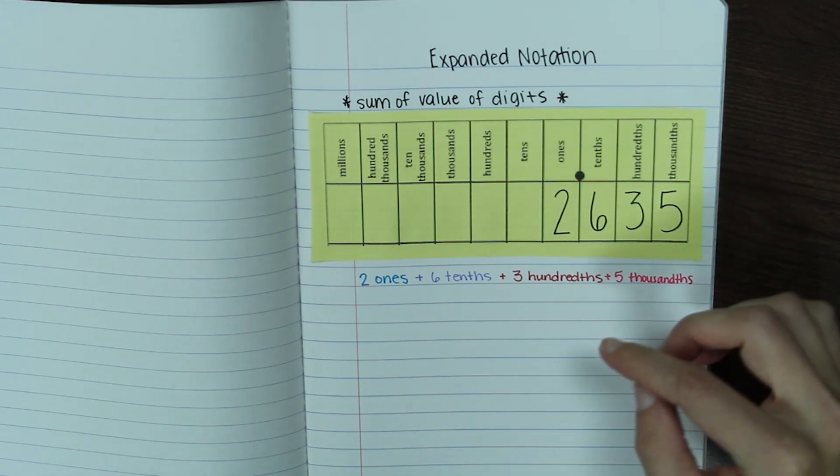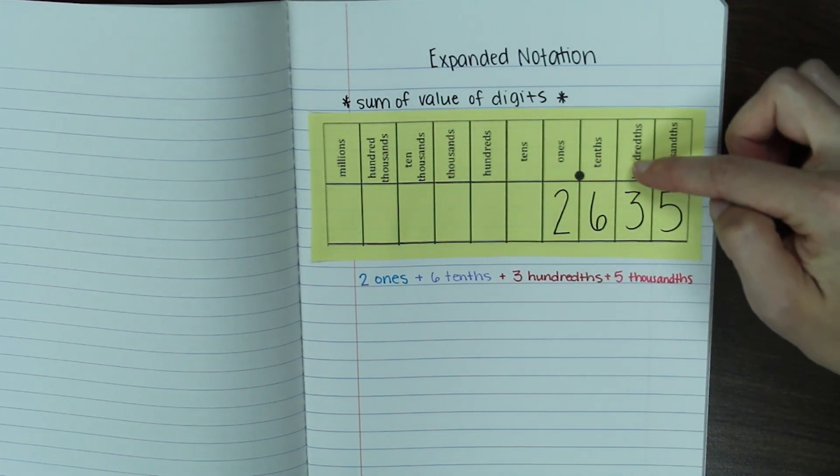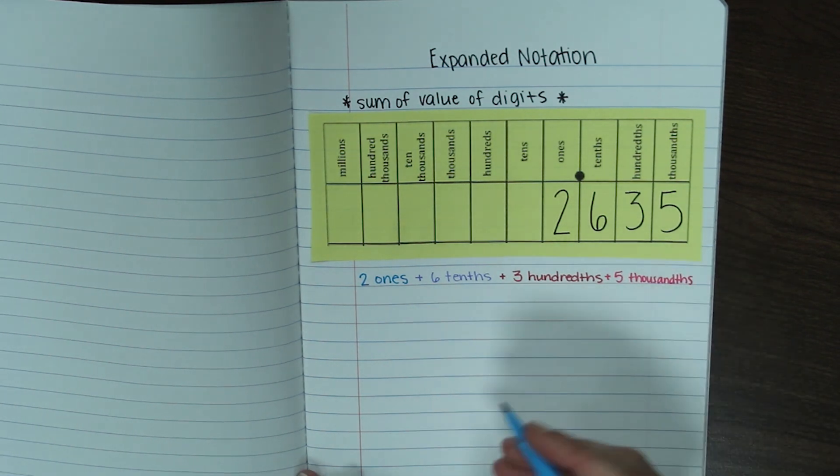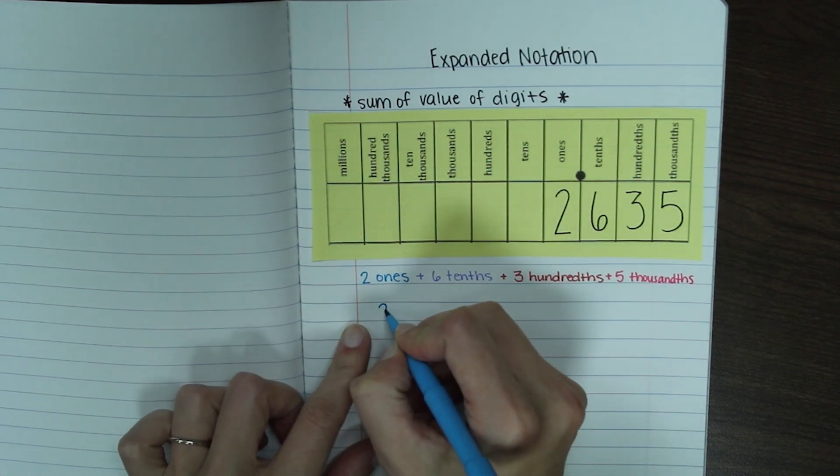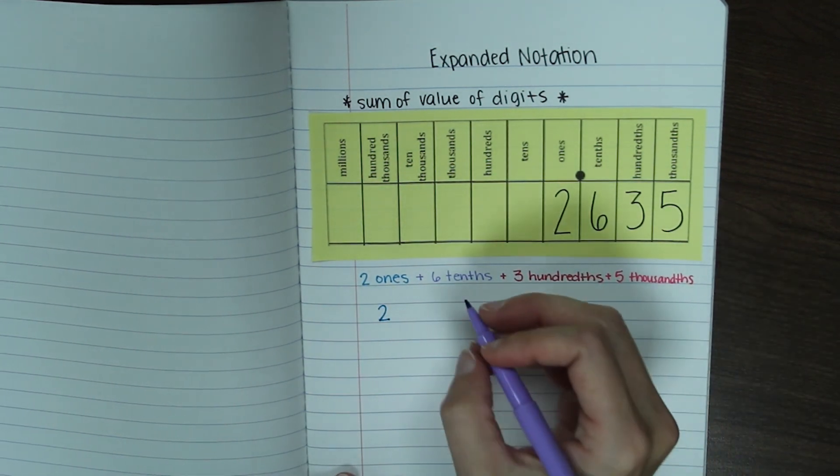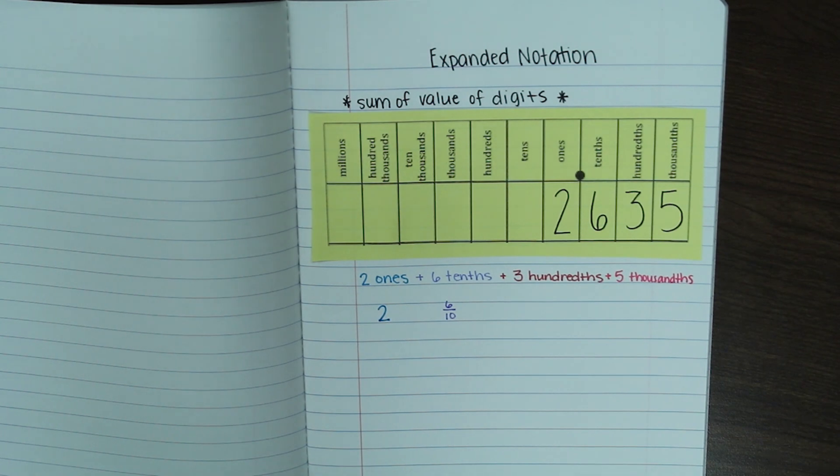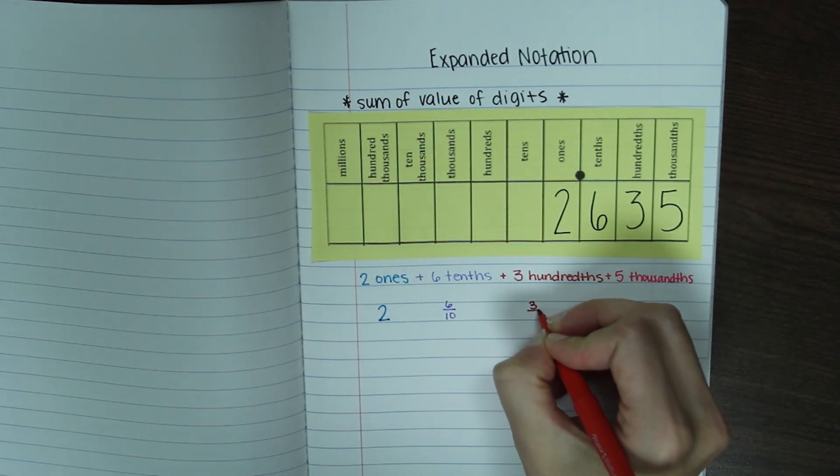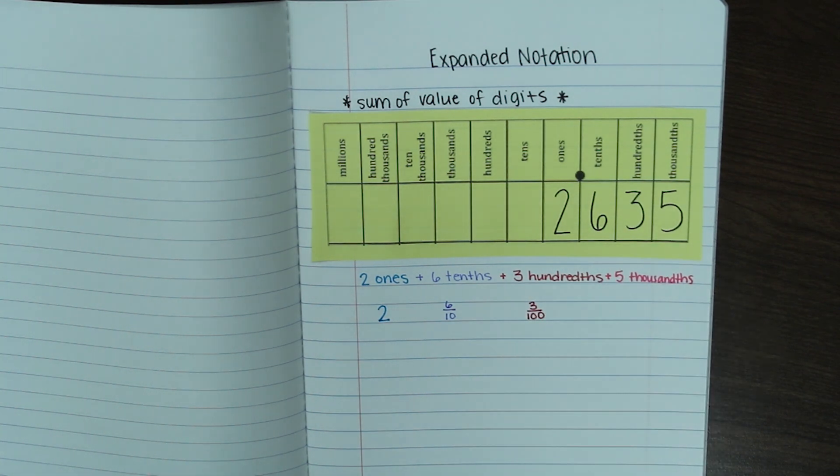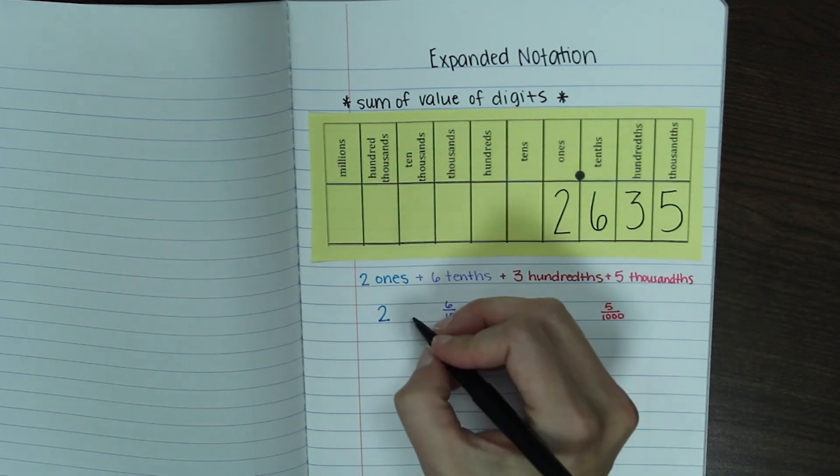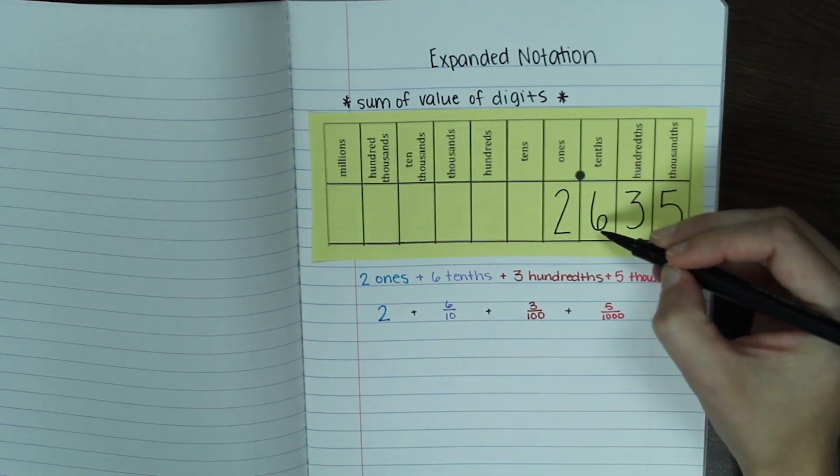So all I've done is taken each number and write it with the name of the place value position. That gave me the value of each digit. Now we're going to take each of these things that I've written out in words and write it as a fraction or a whole number in the case of the two. So two ones is the same thing as two. Six tenths as a fraction, exactly how it sounds, six tenths. Three hundredths. I'll also get these things added together equals our number two and six hundred thirty-five thousandths.